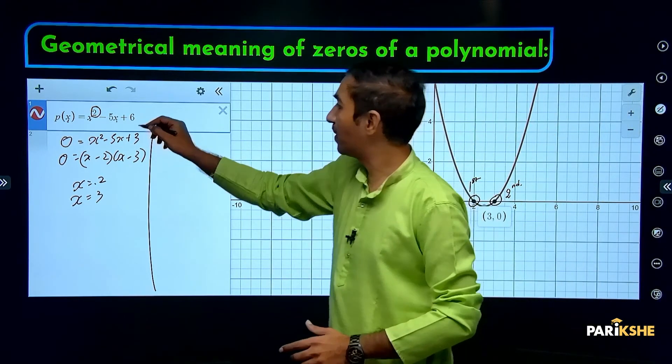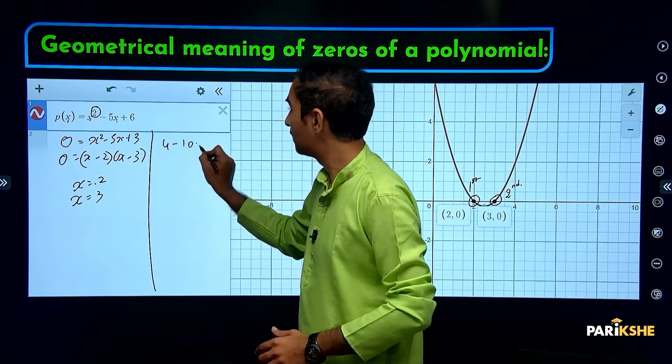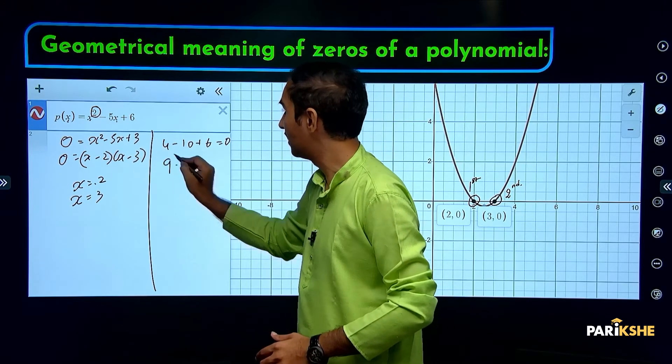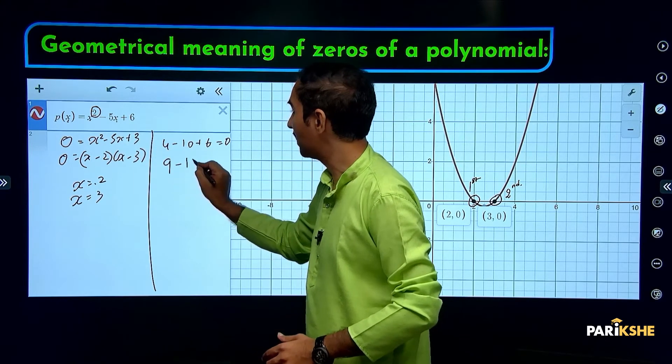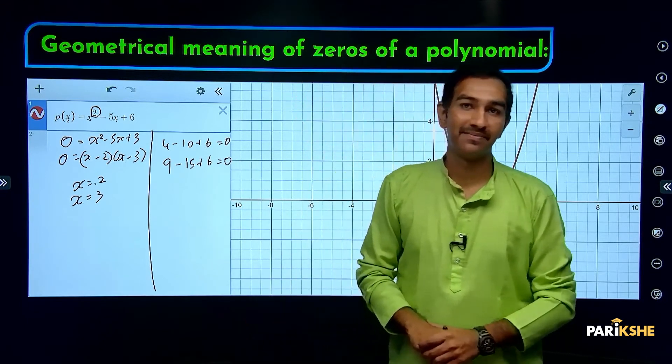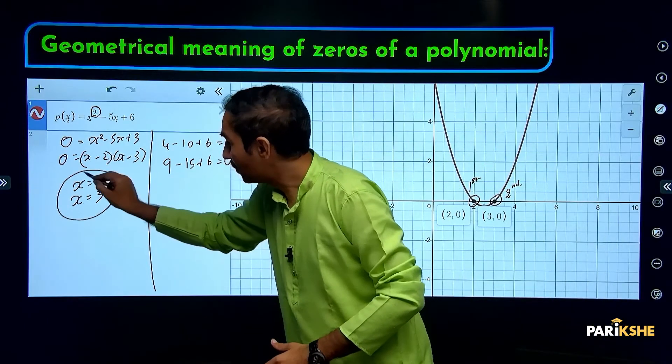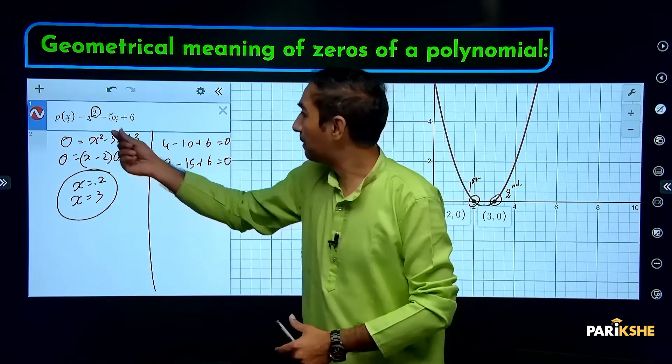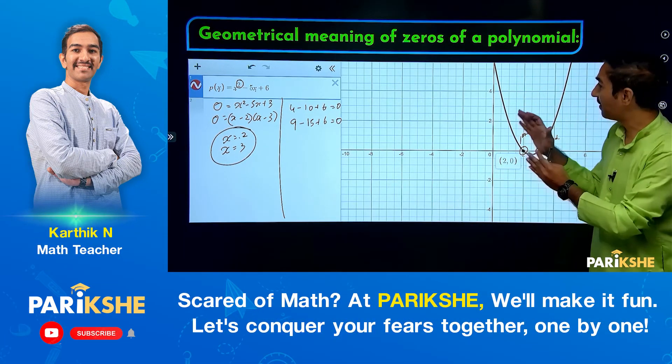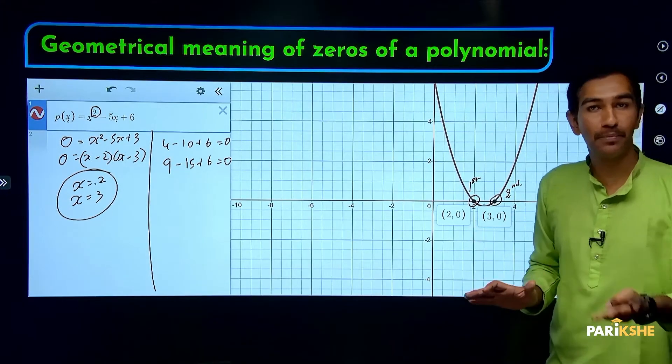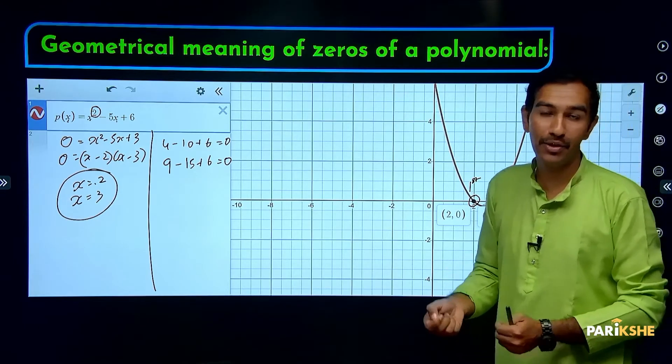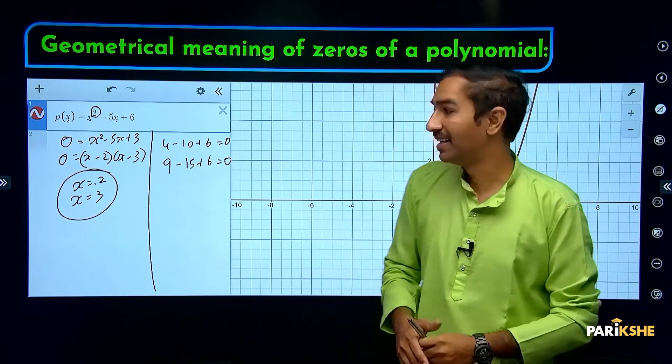Let's verify: 2² = 4, minus 5×2 = 10, plus 6. 4 + 6 = 10, 10 - 10 = 0. For 3: 3² = 9, 5×3 = 15, plus 6. 9 + 6 = 15, 15 - 15 = 0. So geometrically, the number of points where the graph meets the x-axis equals the number of zeros.